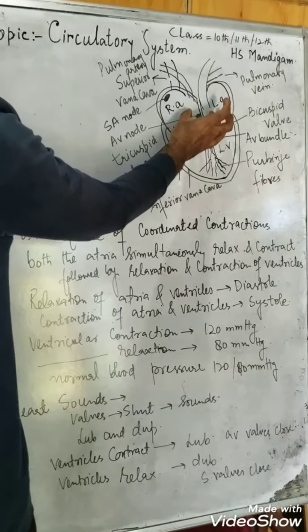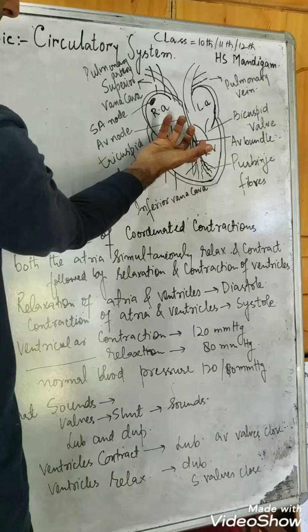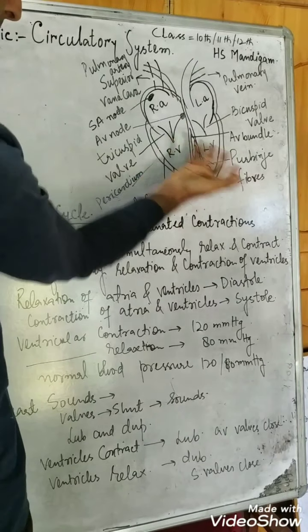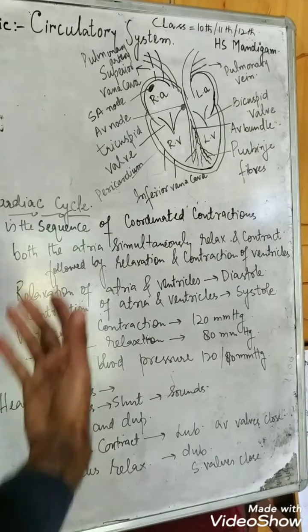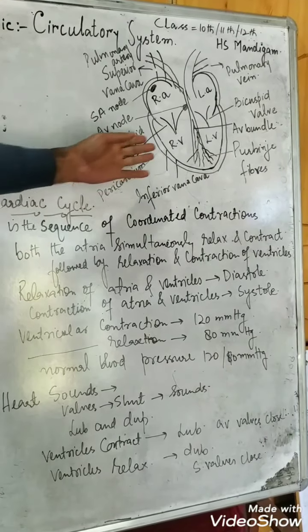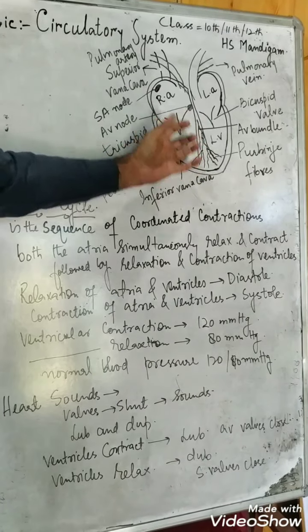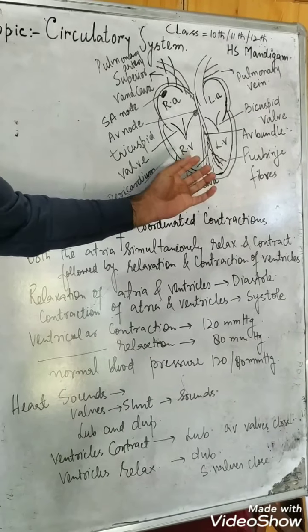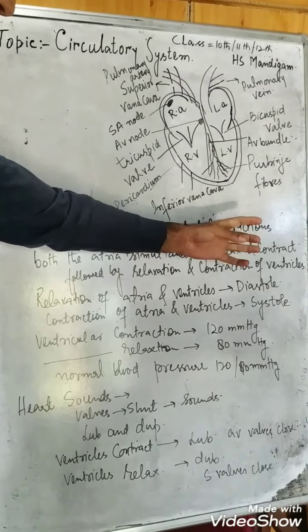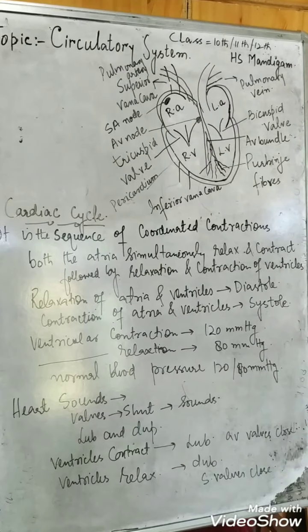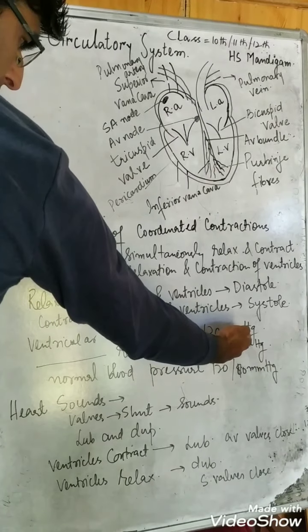At the time of relaxation, when the chambers of the heart relax, the heart is filled with blood. But at the time of contraction, the heart pumps out the blood. It is at the time of ventricular contraction that the heart pumps blood out into the arteries, exerting pressure on the walls of the blood vessels.